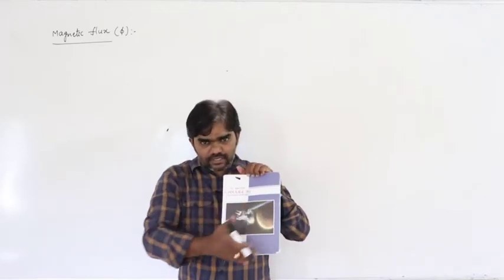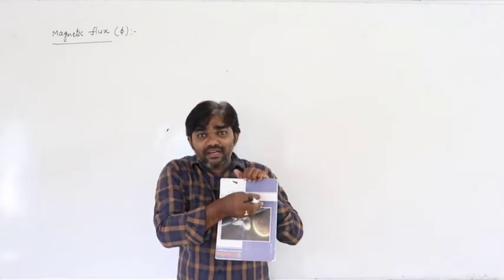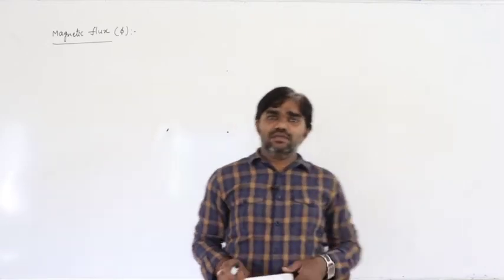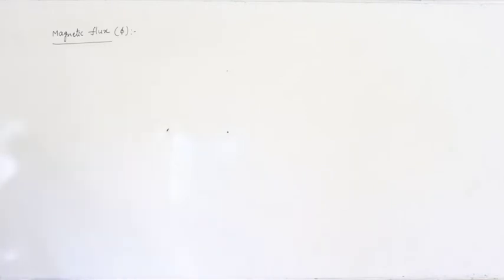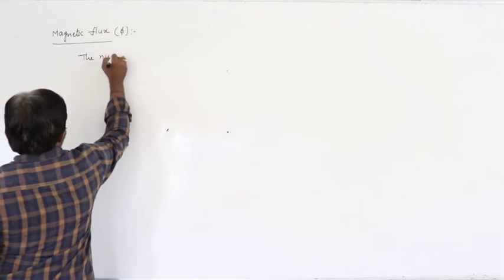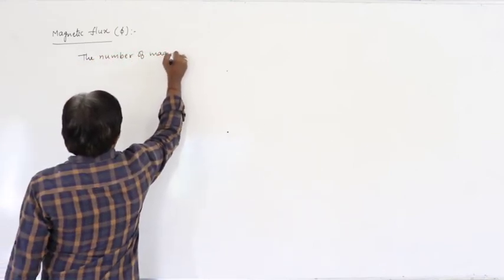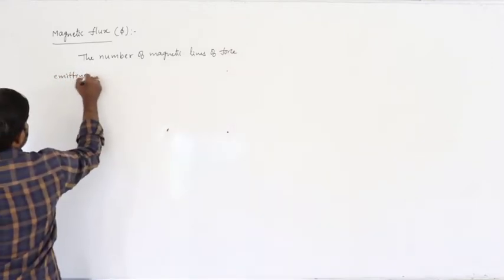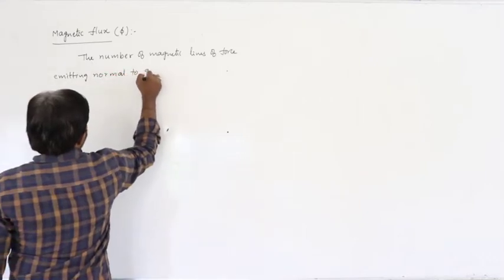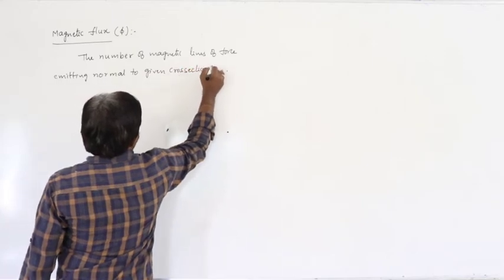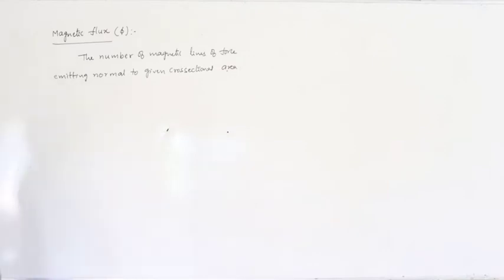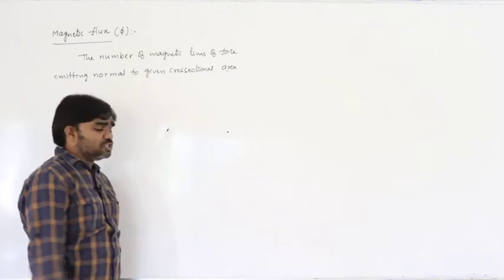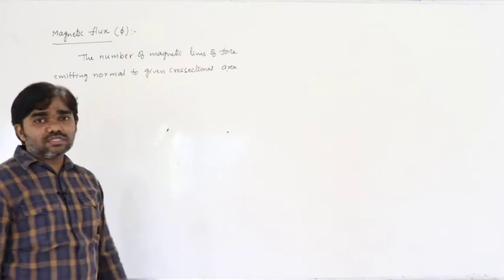The number of lines emitting normal to the surface is called flux. Similarly, magnetic flux is defined as the number of magnetic lines of force emitting normal to a given cross-sectional area. That is called magnetic flux.